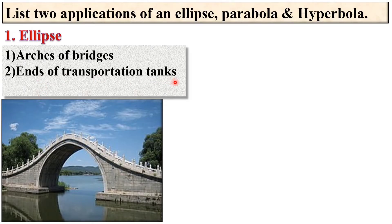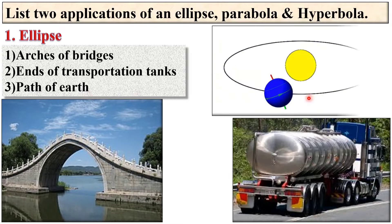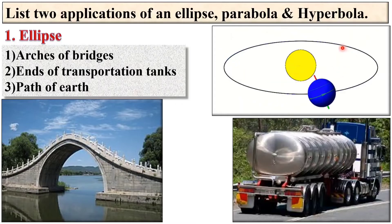Next ends of the transportation tanks. Here you can see this is the transportation tank. Here you can see this is the sun and around the sun the path of the earth makes the shape of ellipse.